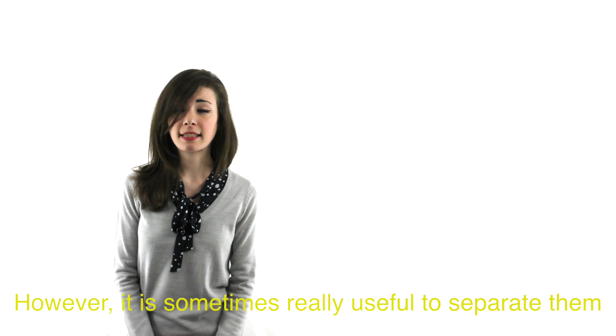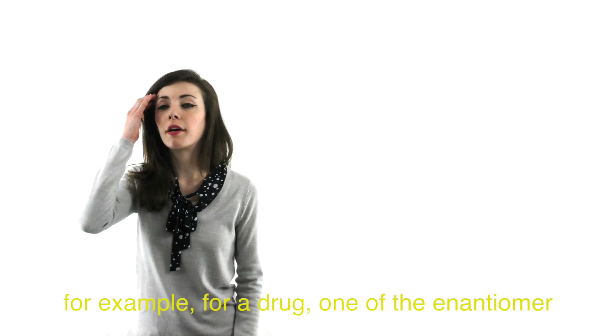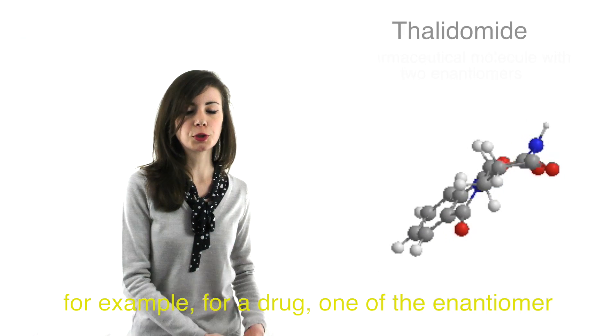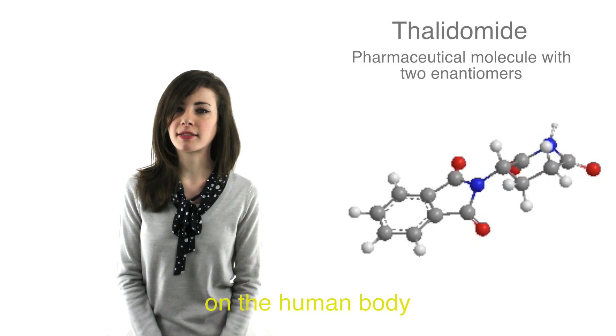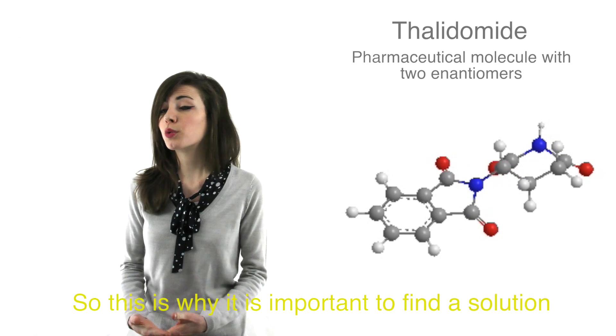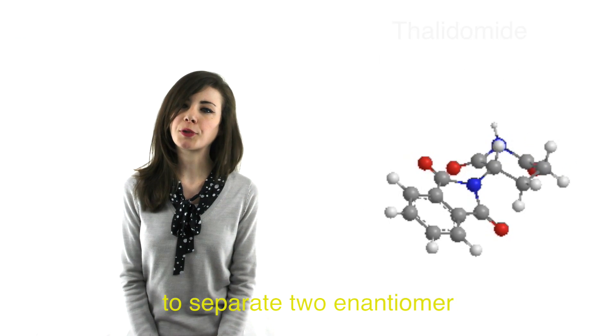However, it is sometimes really useful to separate them. For example, for a drug, one of the enantiomers can have positive effects while the second one can have detrimental effects on the human body. So this is why it is important to find a solution to separate two enantiomers.